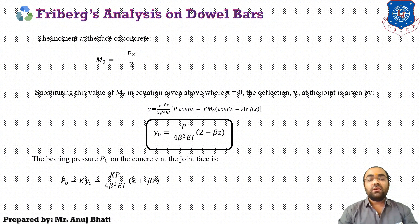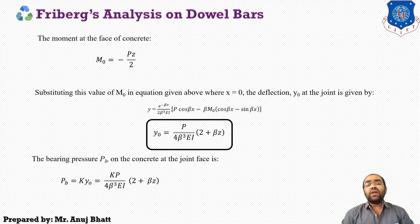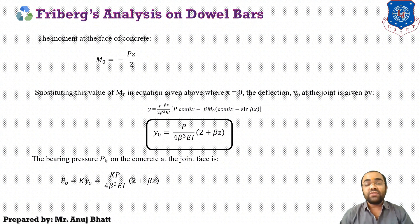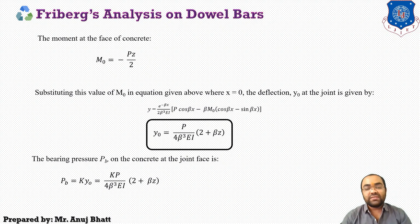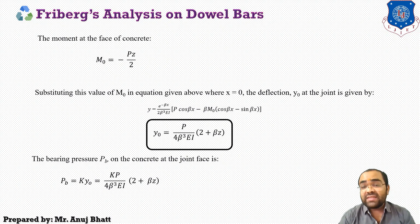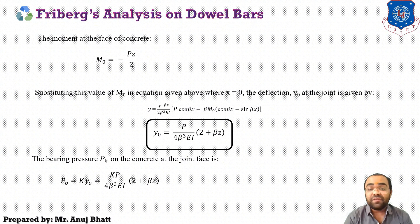The bearing pressure Pv on the concrete at the joint face is K times Y0. Substituting the value of Y0 gives the bearing pressure on the concrete at the joint face. The value of K is suggested by Grinter and Freiburg together, ranging between 8300 to 41500 kg/cm³. The modulus of dowel support is the reaction per unit area causing a deflection of 1. Since beta varies as the fourth root of K, large changes in the value of K do not greatly affect the stress calculation.